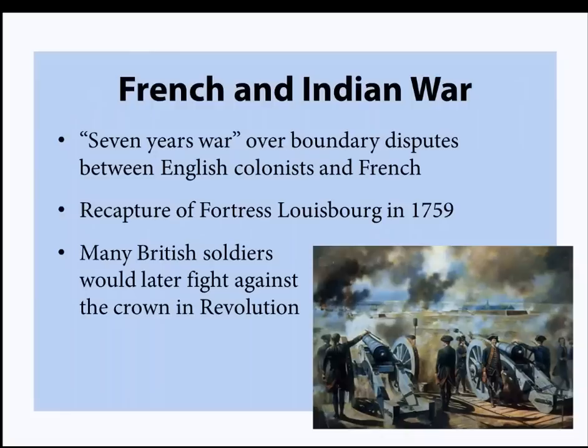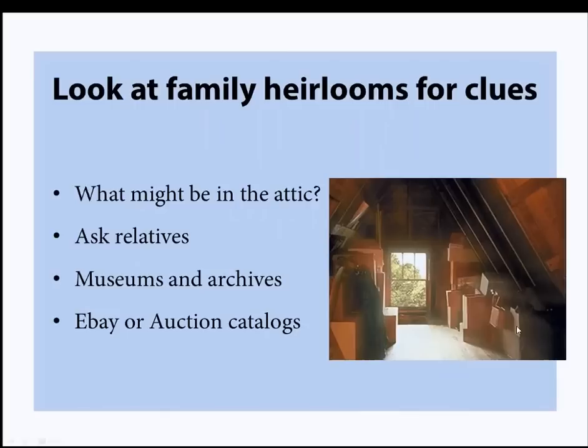The French and Indian War — known in Europe as the Seven Years War — ran from 1754 to 1763, starting over border disputes between French and English colonists two years earlier. The recapture of Louisbourg in 1759, the exile of the Acadians, and the loss of Quebec to the English in 1760 were major defeats of French control. Thousands perished throughout North America and Canada. Many soldiers who served in the British Army and local militias during the French and Indian War would later serve against King George III in the American Revolutionary War.